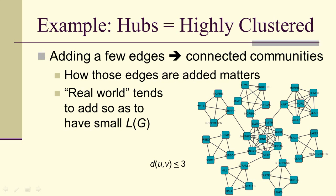Now, you can add a few edges in a different way. Real world tends to add edges so as to have a small shortest path length. So here you see that the distance between any two vertices is less than or equal to 3. Therefore, L of G is less than or equal to 3.